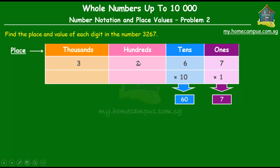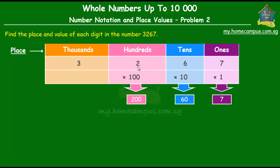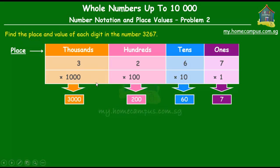Let's move on to the digit 2. The digit 2 is in the hundreds place, so its value is 2 times 100, and the value is 200. Similarly, for thousands, since 3 is in the thousands place, its value is 3 times 1000 — three of these big stacks — and that's equal to 3000.